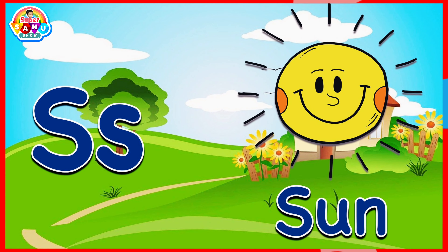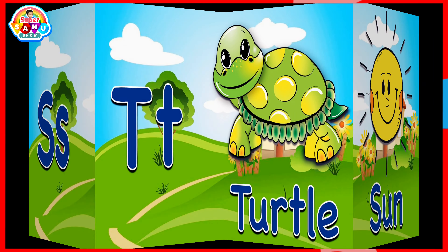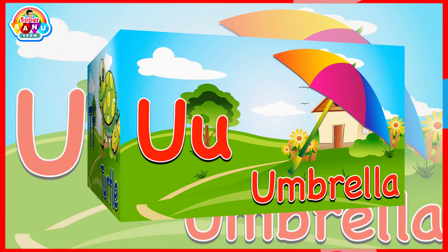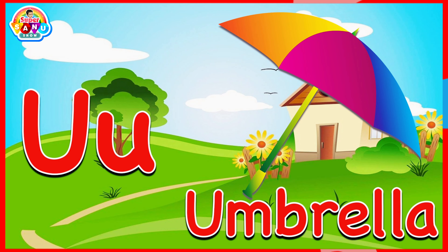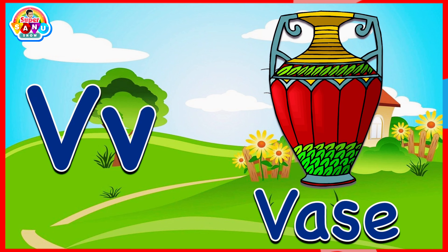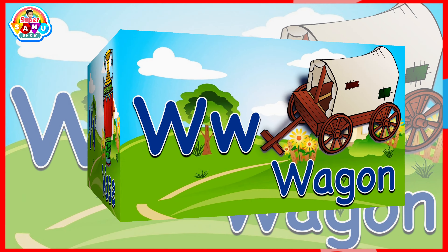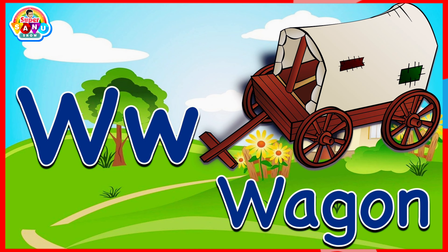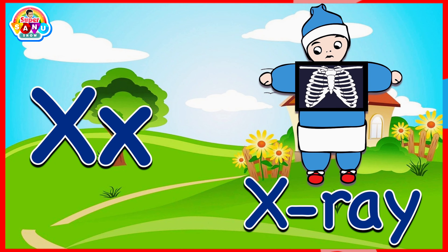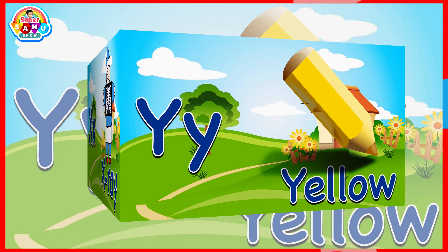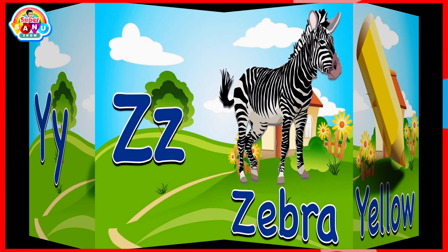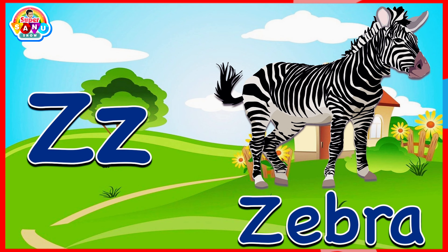S for sun, T for turtle, U for umbrella, V for vase, W for wagon, X for x-ray, Y for yellow, Z for zebra.